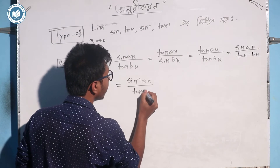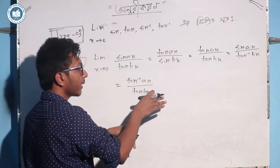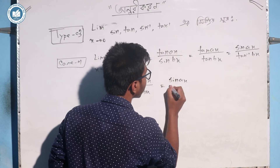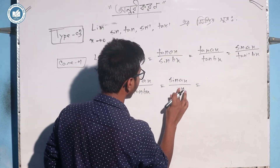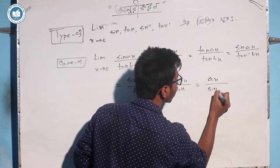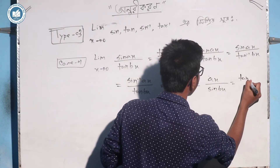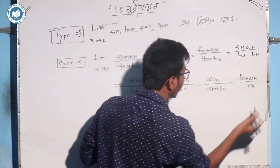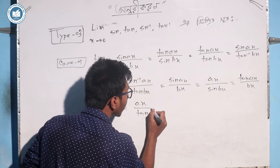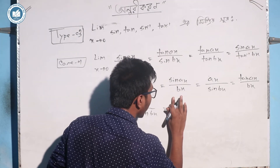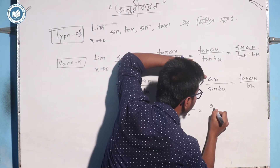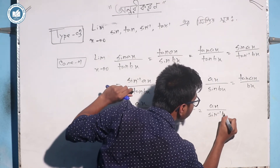So it's bx — it's a sin bx. This is tan ax by bx. It's ax by tan bx. So this is the inverse. So this is a sin bx, and this is a sin bx.